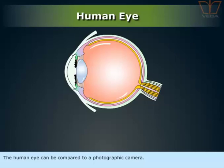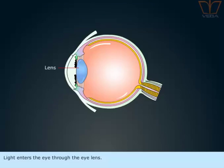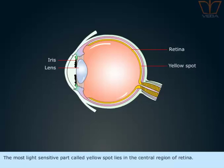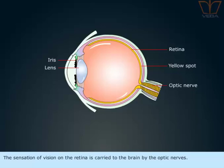The human eye can be compared to a photographic camera. Light enters the eye through the eye lens. There is an opaque color diaphragm in front of the eye called iris. The image is formed on the retina, which is a delicate light sensitive membrane. The most light sensitive part, called the yellow part, lies in the central region of the retina. The sensation of vision on the retina is carried to the brain by the optic nerves.